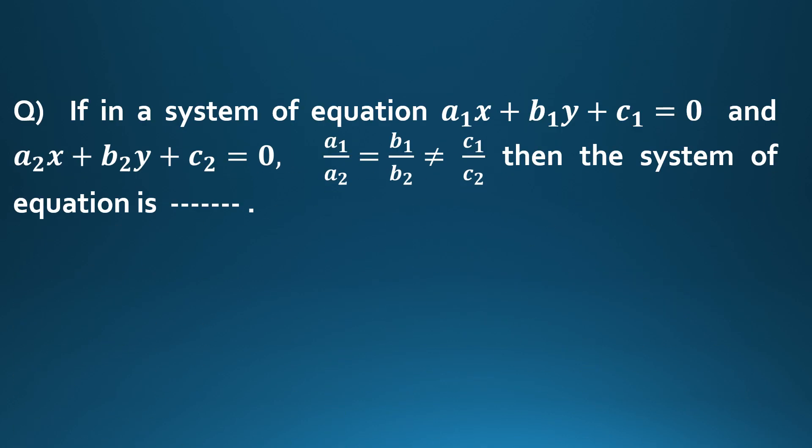Next question: In a system of equations a1x + b1y + c1 = 0 and a2x + b2y + c2 = 0, if a1/a2 = b1/b2 but is not equal to c1/c2, then the system of equations is what?